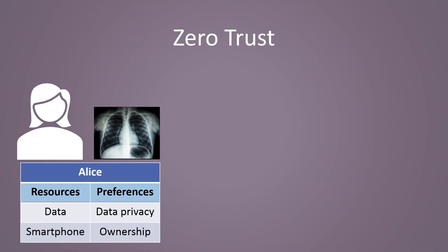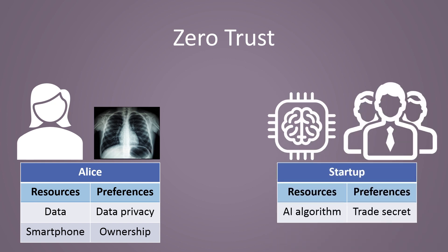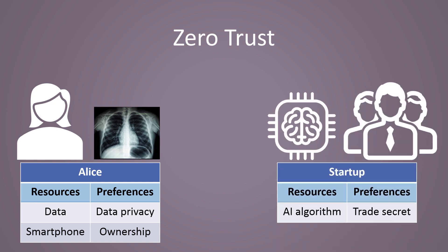For zero trust, imagine Alice, who keeps her health records in her smartphone. She also cares about her privacy and how her data is used. Imagine a startup comes with an AI algorithm which can identify emerging epidemics just by scanning health records of multiple individuals like Alice.